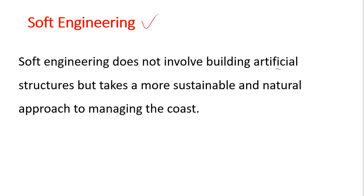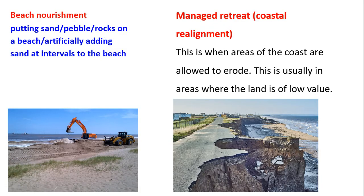Soft engineering does not involve building artificial structures but takes a more sustainable and natural approach to managing the coast. Beach nourishment involves putting sand, pebbles, or rock on the beach — adding artificial sand at intervals to the beach. You pick sand from somewhere and nourish the beach with it, allowing it to erode over time and then adding more sand. That's beach nourishment.